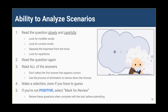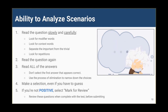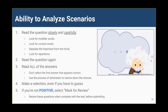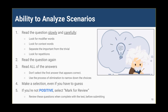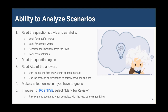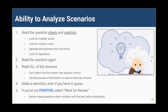Look for repetitions. Step two: read the question again. Step three: read all the answers. Don't just select the first answer that appears correct. Use the process of elimination to narrow down the choices. Step four: make a selection even if you have to guess. Step five: if you're not positive, select 'mark for review.' You can then access these questions that you're not sure about at the end of the test and review them all.